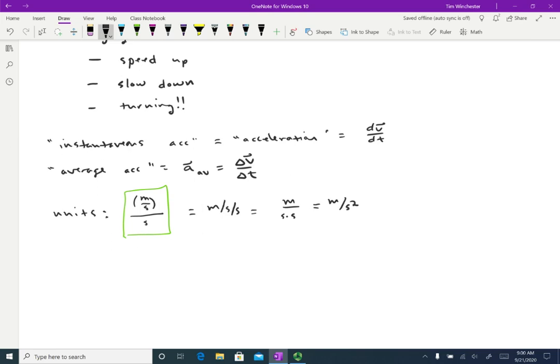So a second squared doesn't really make any sense. And so don't try to make sense of that. You should always be thinking of this as meters per second per second. But meters per second squared is a convenient way to write it.